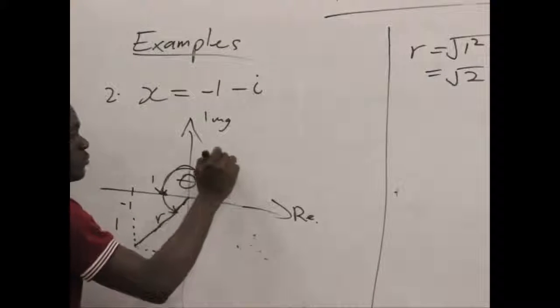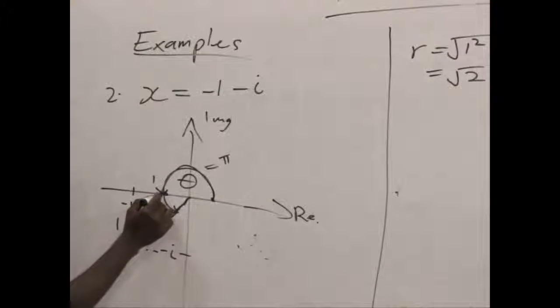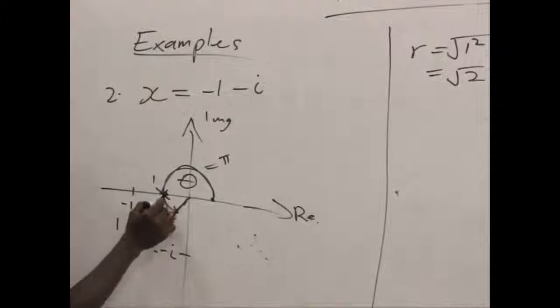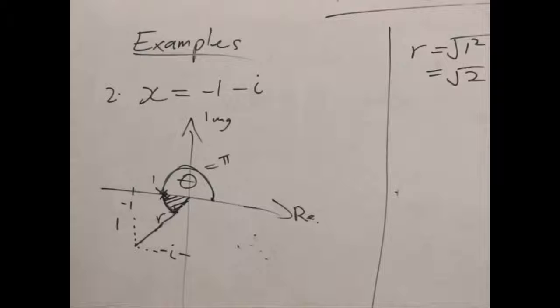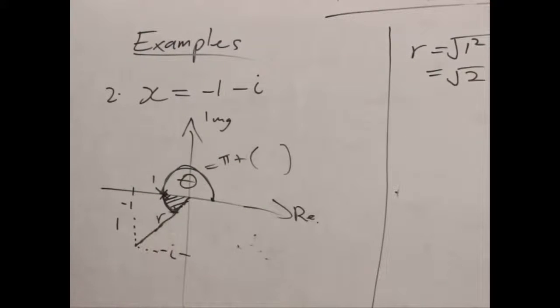So we only need to find this remaining portion that I've shaded. Then we add it towards pi to get our full theta.